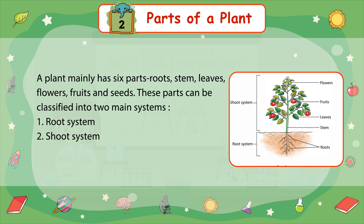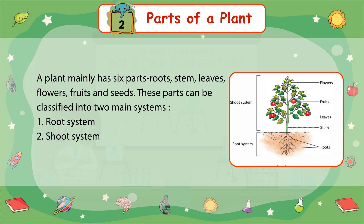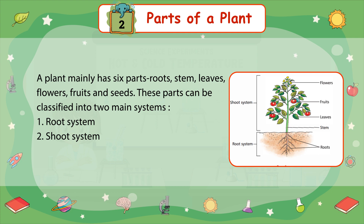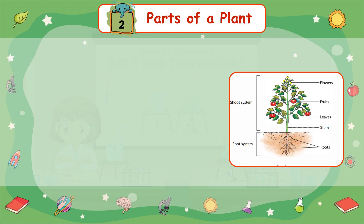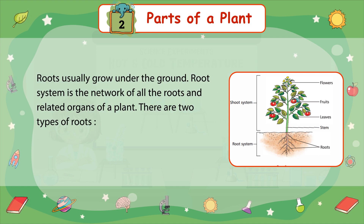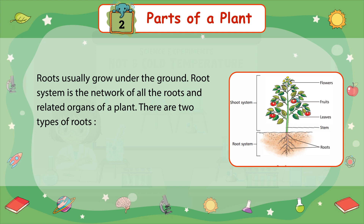The shoot system includes flowers, fruits, leaves, and stem. The root system includes roots. Roots usually grow under the ground. The root system is the network of all the roots and related organs of a plant.